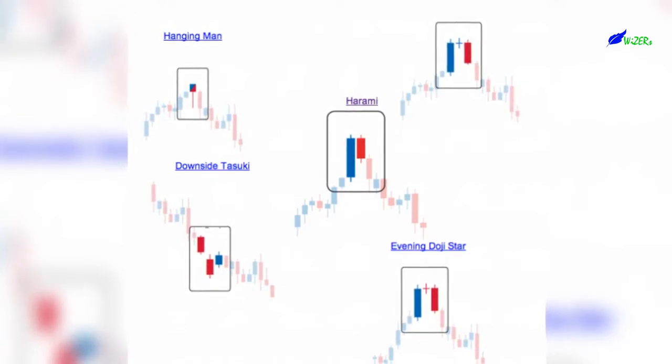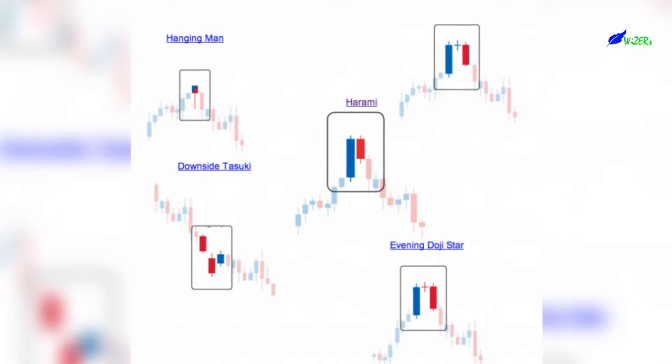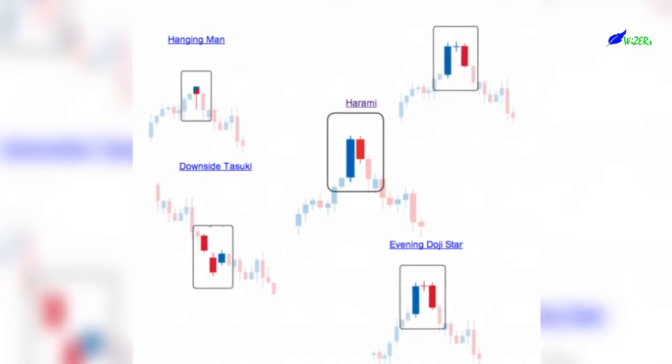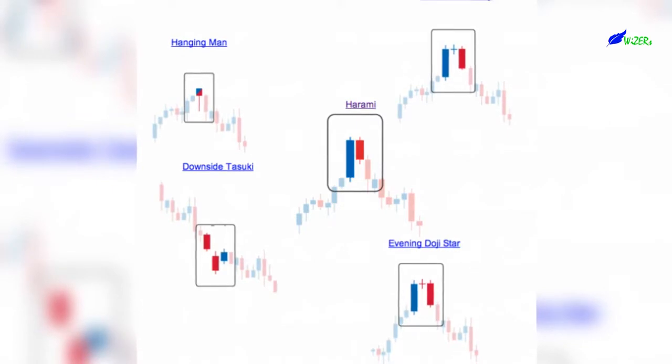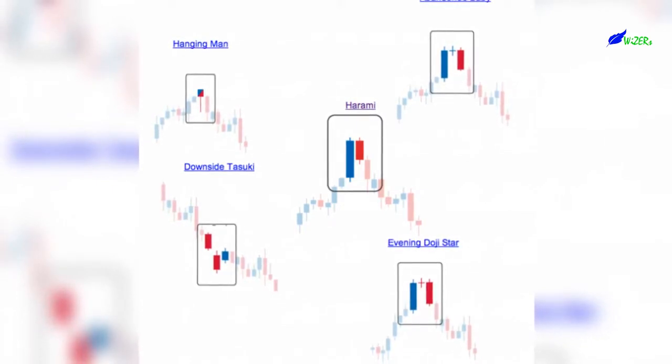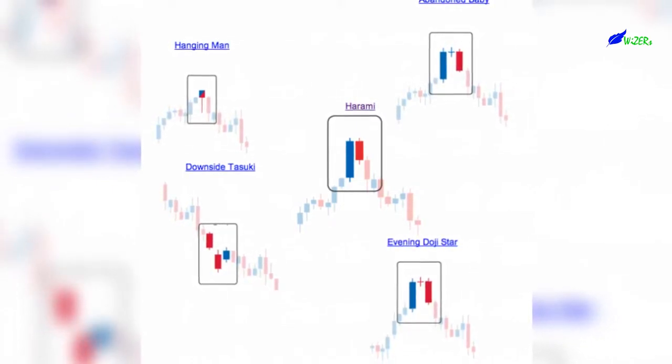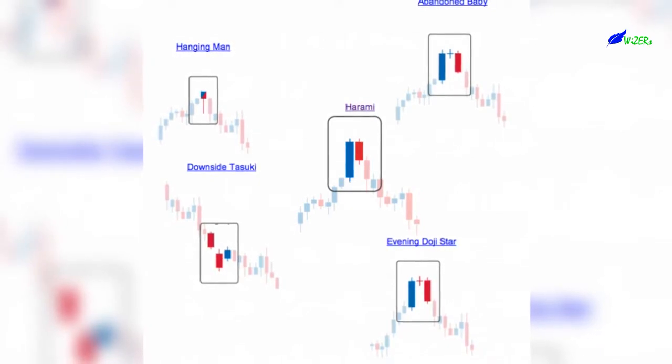Today some of these patterns have kept their Japanese names such as the Doji Star, Harami, and Tansuki. Others have been translated into an English equivalent, like the Abandoned Baby or Hanging Man. Either way, the patterns are still the same today as they were back then and just as powerful for your trading.